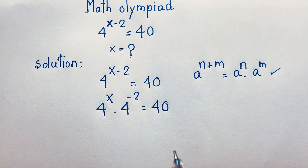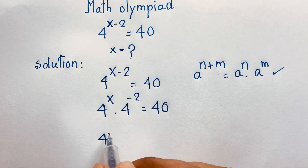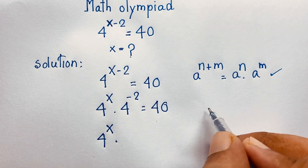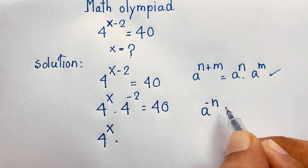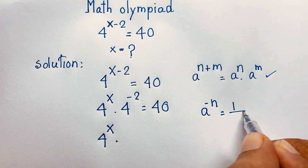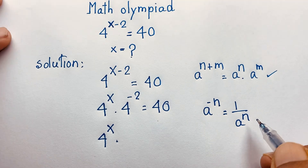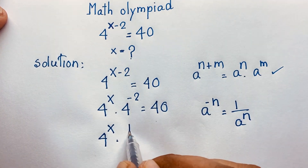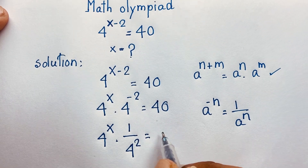Now, this is 4 to the power x, but this is 4 to the power minus 2. We know that a to the power minus n equals 1 over a to the power n. If I apply this formula, 4 to the power minus 2 becomes 1 over 4 to the power 2, so 4 to the power x times 1 over 16 is equal to 40.